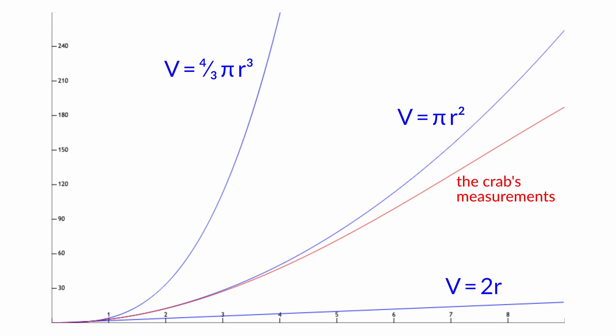Then the crab has an idea: maybe its space has a fractional number of dimensions. Since the red line for its measurements is somewhere between the blue line for a one-dimensional space and the blue line for a two-dimensional space, maybe its universe has somewhere between one and two dimensions. But that doesn't work either. The best fit the crab can come up with is a 1.9-dimensional universe. The green line is certainly closer to the red line of its measurements, but still not an exact match — it starts too low and ends too high. No matter what number of dimensions the crab tries, there's no way to explain how the amount of space it covers relates to the distance it moved.